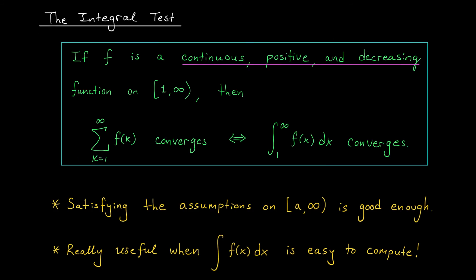Here is the integral test in all its glory. If f is continuous, positive, and decreasing on the interval from 1 to infinity, then the series f(1) + f(2) + f(3) + … converges if and only if the improper integral from 1 to infinity of f(x) dx converges. If the improper integral converges, the series converges. If the improper integral diverges, the series diverges. The two do the same thing.